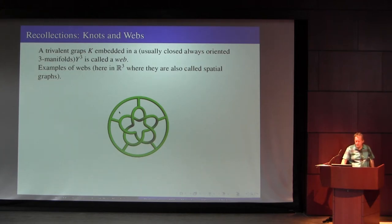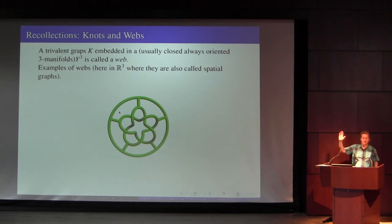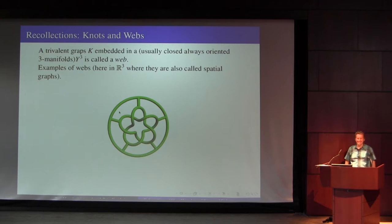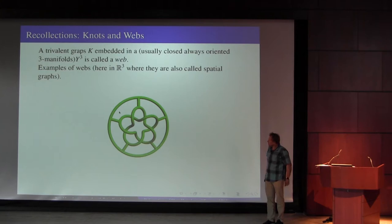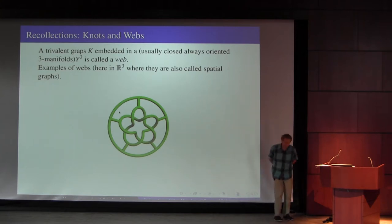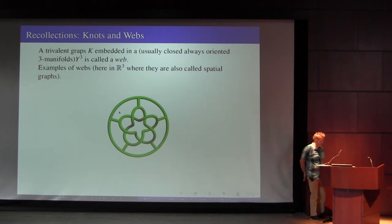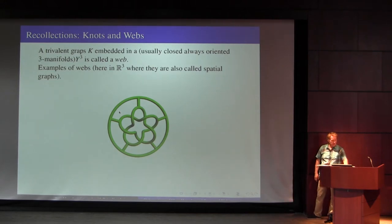There's a nice graph here. How many graph theorists recognize the graph? Why is it important? The abstract graph is the Peterson graph — it's the smallest snark, a not-three-colorable graph.